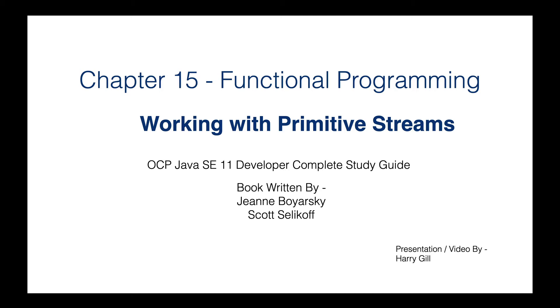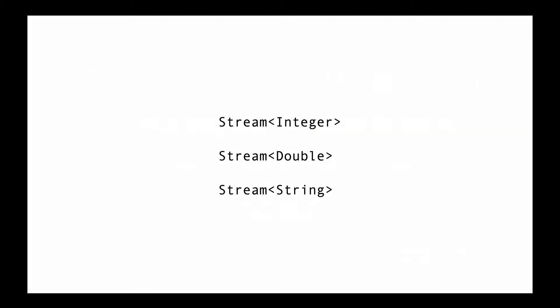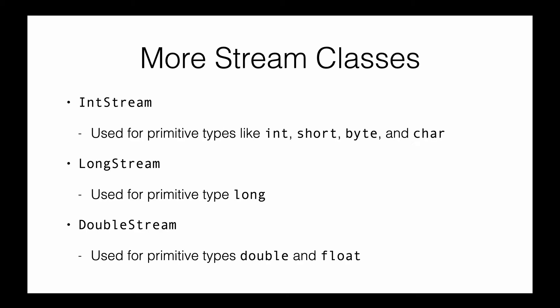Hello everyone, this is Hari Gill and in this video we are going to look into primitive streams. So far the stream class we have been looking into is a generic stream class, which can be used to store integer, double, string, or any other custom object. However, we have more stream classes that are primarily used to store the primitive types.